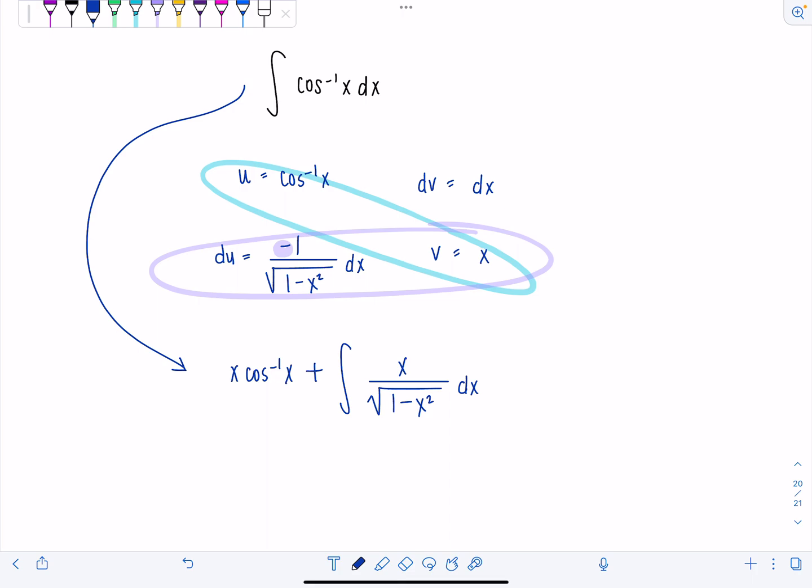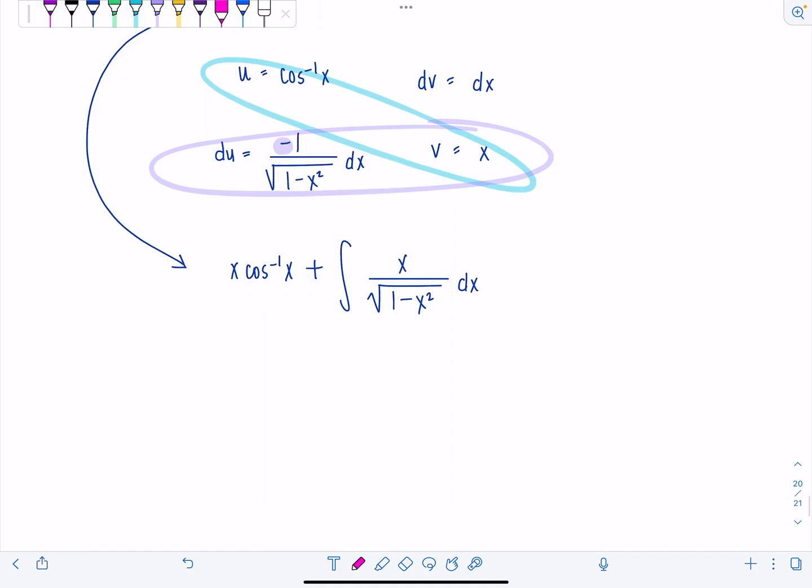Now from here, let's think to ourselves, how are we going to evaluate this antiderivative? Well, I'm noticing that underneath the radical, I have a quadratic expression, and in the numerator, I have x to the first power. So it's a great time to do u substitution. But remember, we already used up the variable u when we did by parts, so pick a different letter. I like to switch to t when this comes up.